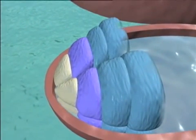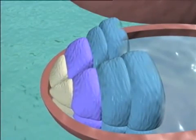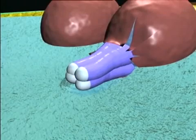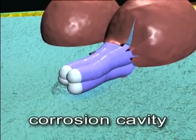The suspensor initials elongate, first pushing the embryo initials up against the wall of the archegonium, and then out into the female gametophyte, where a breakdown of adjacent tissue creates a corrosion cavity.